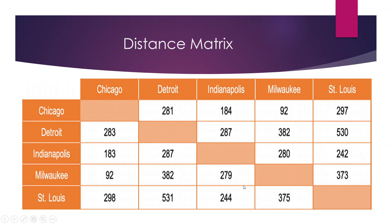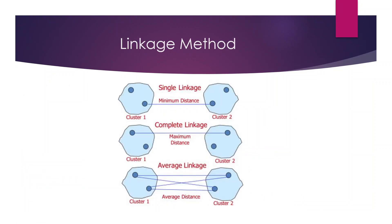What's the simple meaning of Euclidean distance? Let's understand by this distance matrix. If Milwaukee and Chicago have a distance of 92 kilometers, they will be very near to each other on the dendrogram. But St. Louis and Detroit are far apart, and therefore on the dendrogram they will also be far apart. In cluster analysis, we have some linkage methods for calculating the distance between two clusters. One is single linkage, which considers the minimum distance between two cases. The second is complete linkage, which considers the farthest distance between two clusters. The third is average linkage.